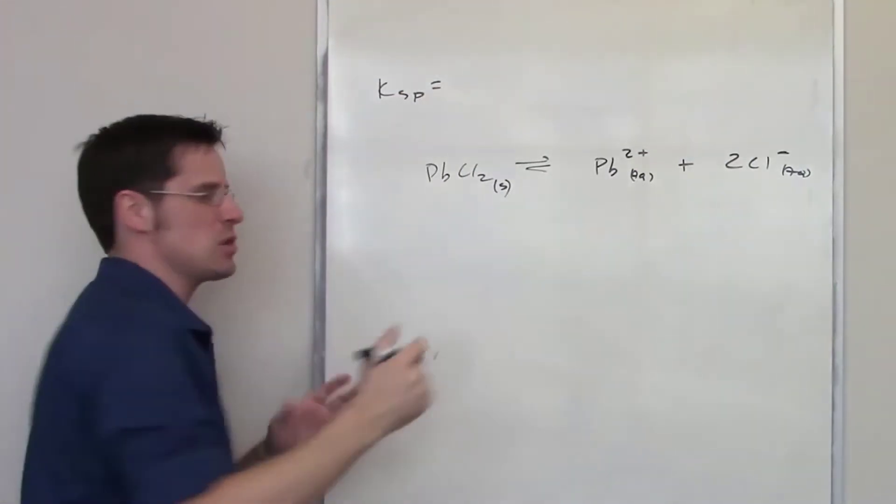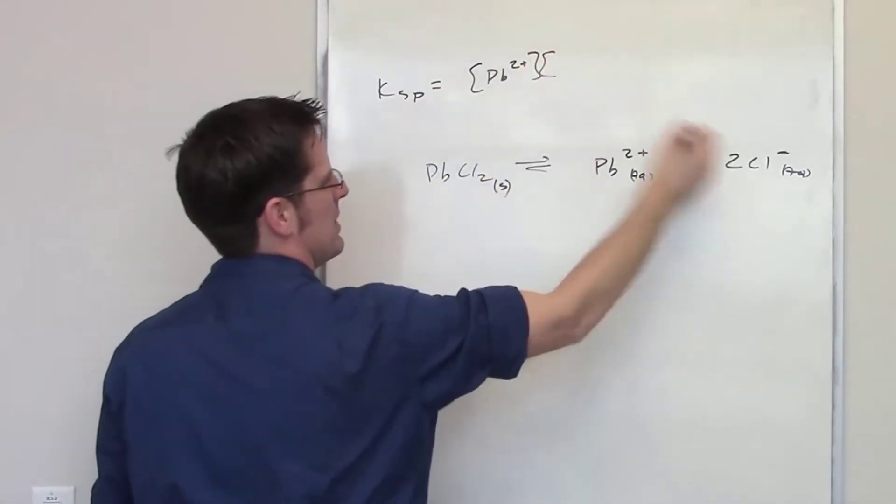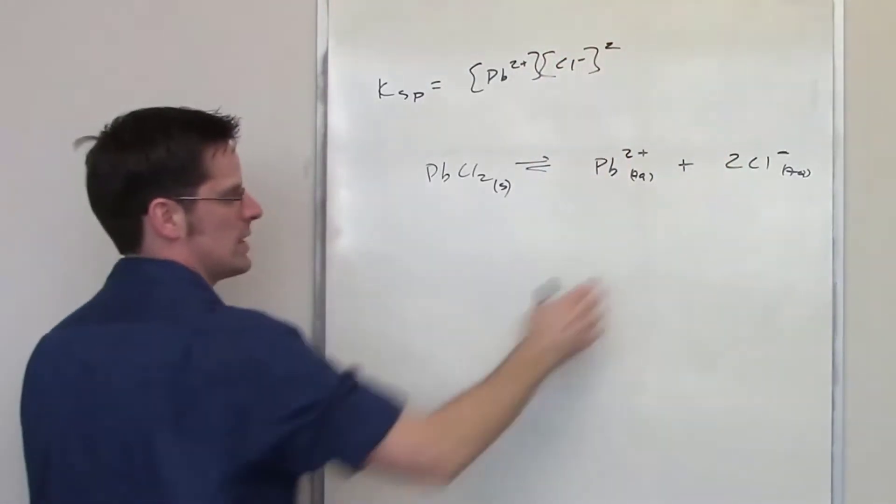Ksp is, of course, expression-wise going to be equal to the concentration of lead 2+ multiplied by the concentration of chloride minus squared. So I get the squared from this 2.